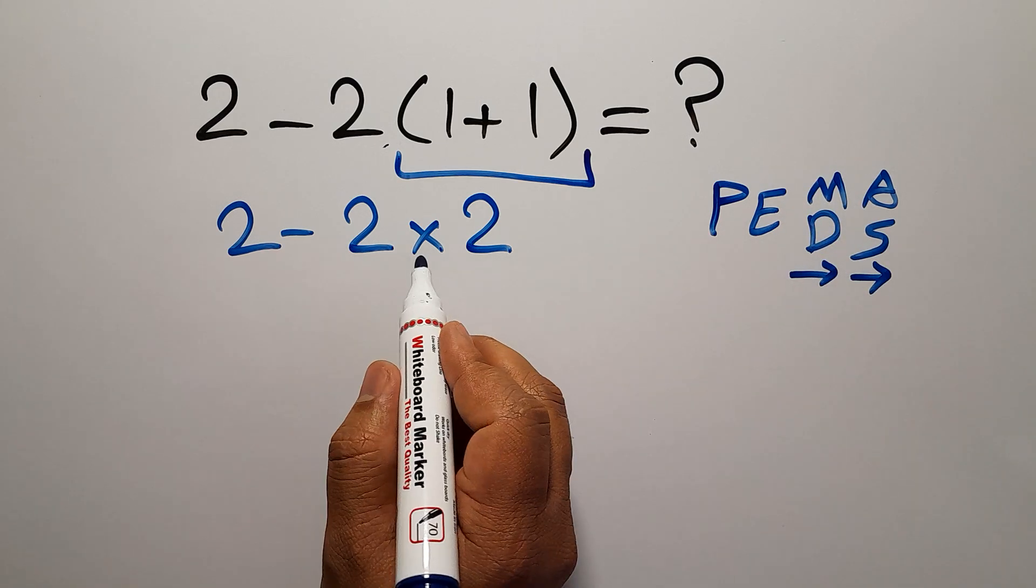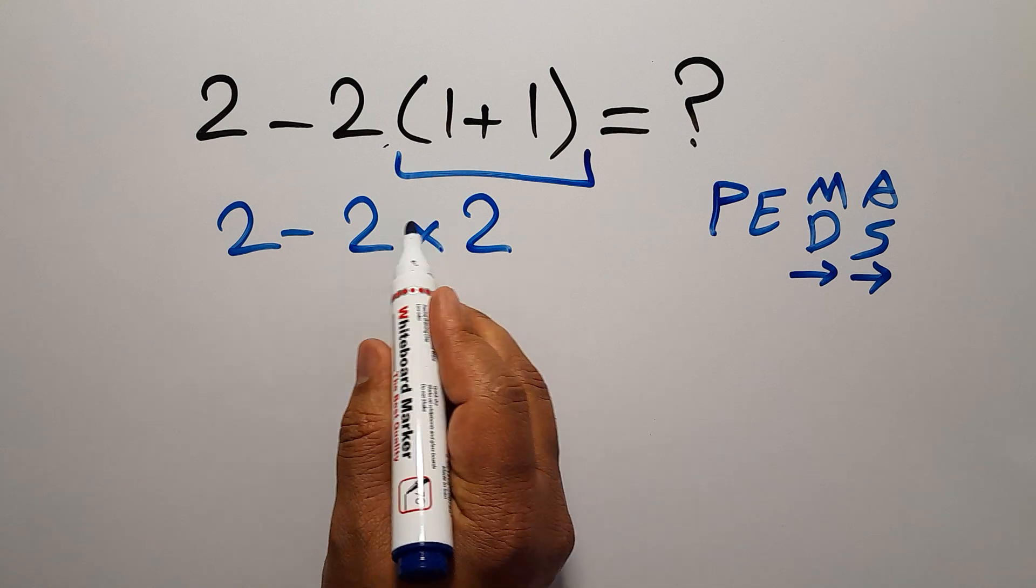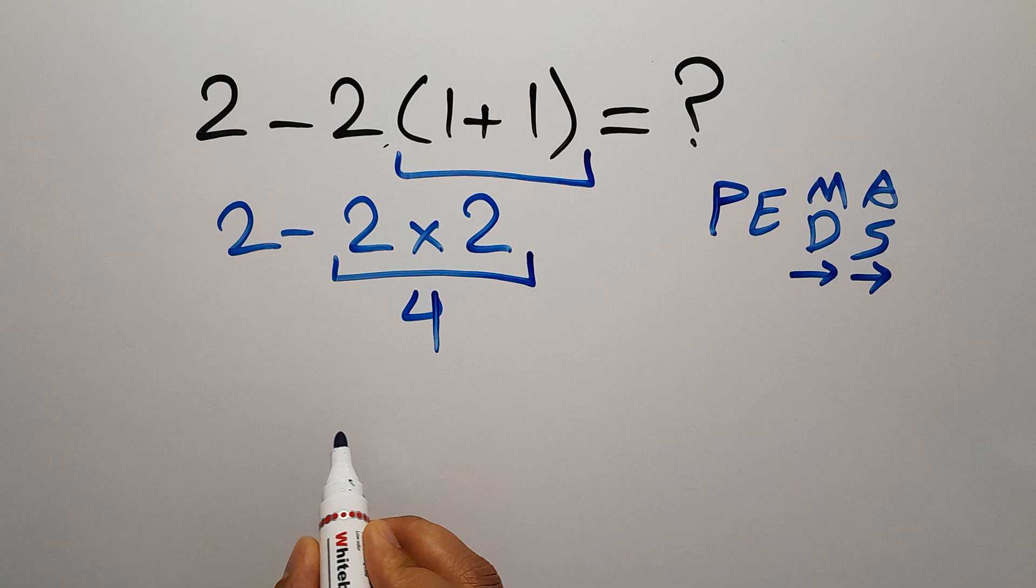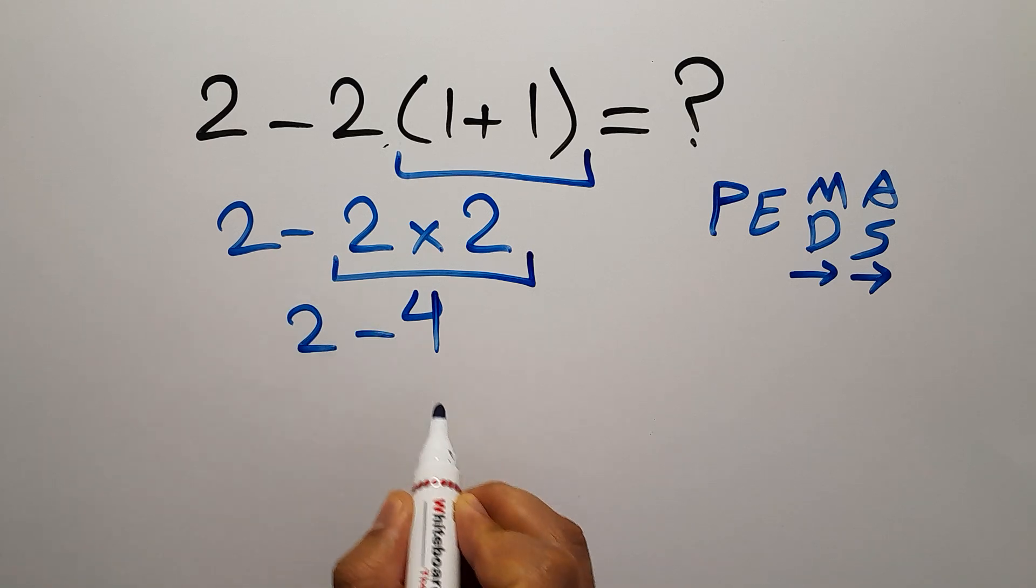So here, we have to do this multiplication. 2 times 2 gives us 4. So 2 minus 4, which equals negative 2.